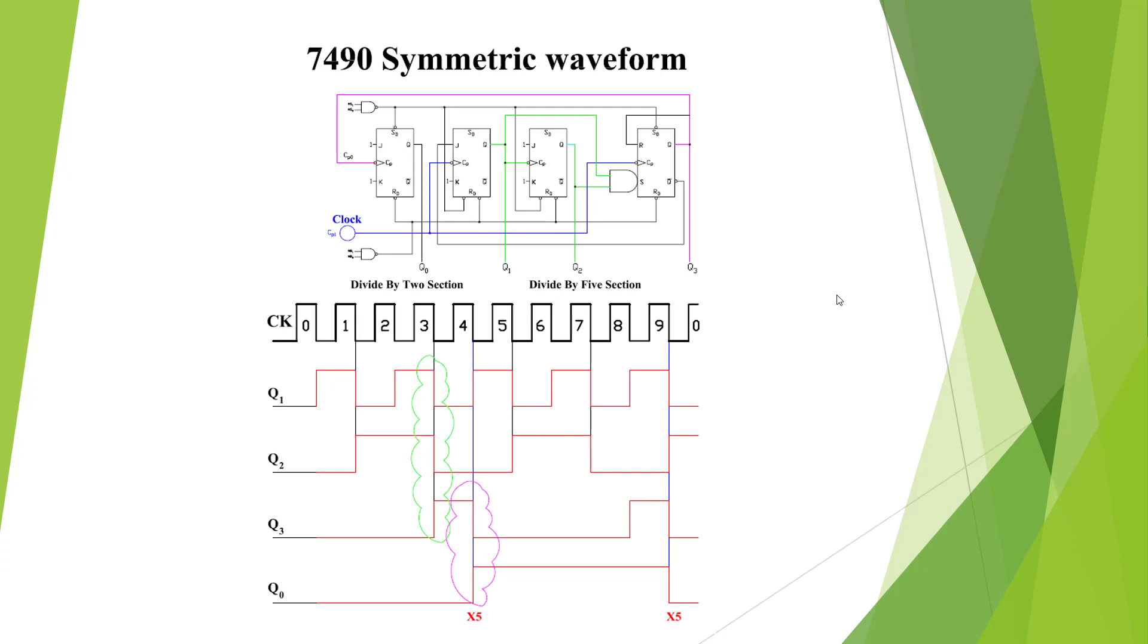This is a 7490 set up as a symmetric waveform. They call it biquinary, which is a 5 into a 2. So what they've done is clocked the 5 section into the 2 section, and we get this output. I'm unsure of what this is used for. It would be nice for LED lights or something. It's kind of nice looking. I've heard it's used in communication circuits, but I've never seen a use for it.